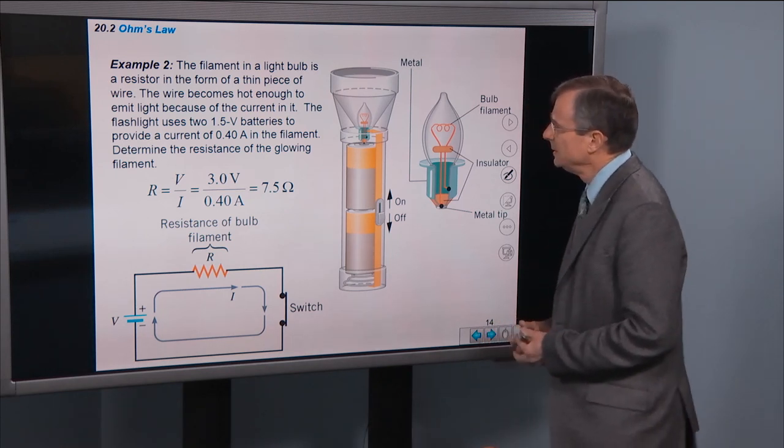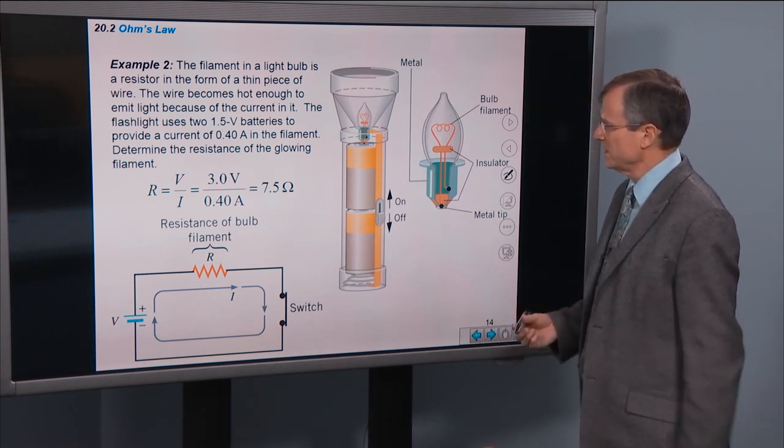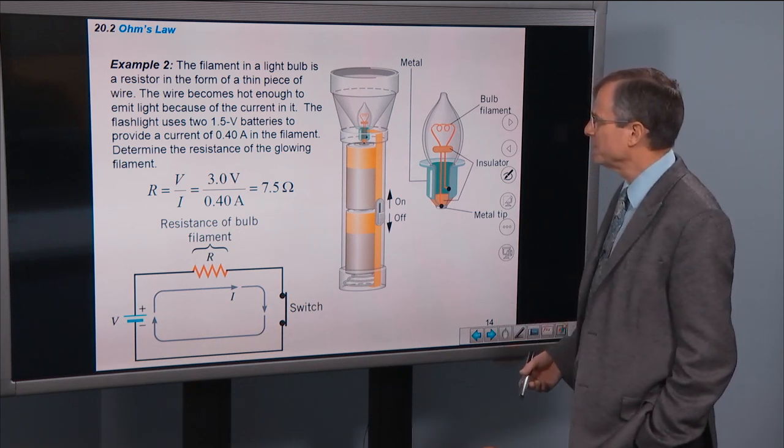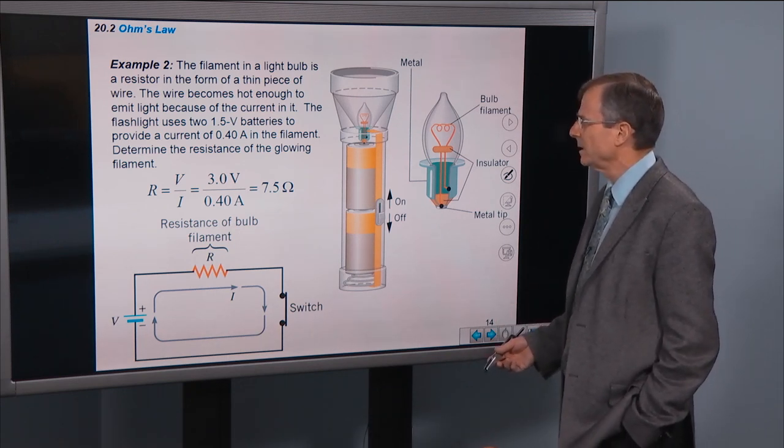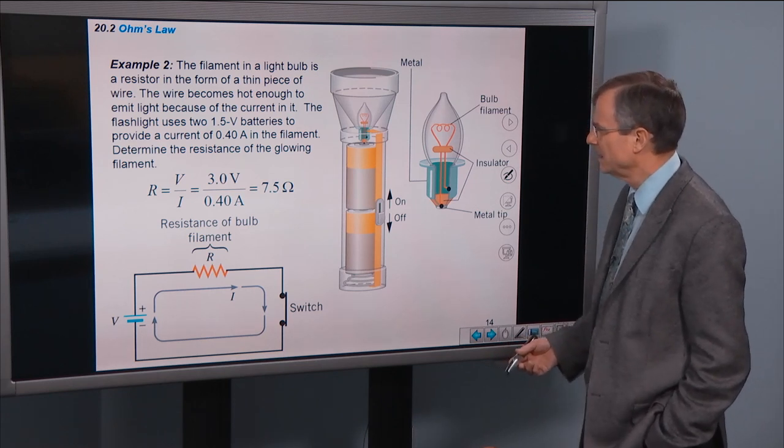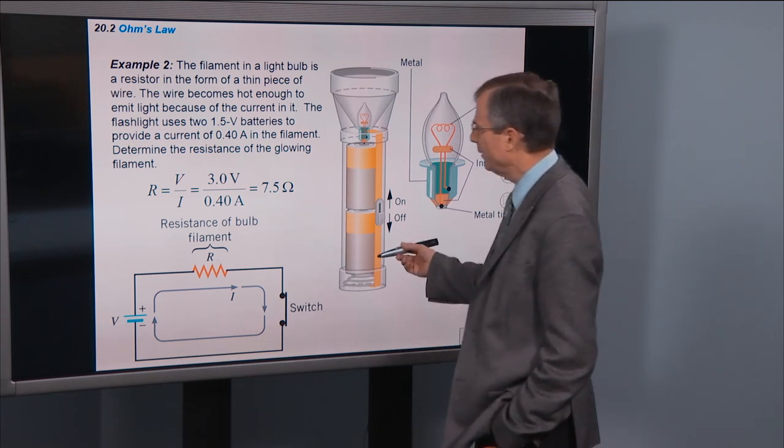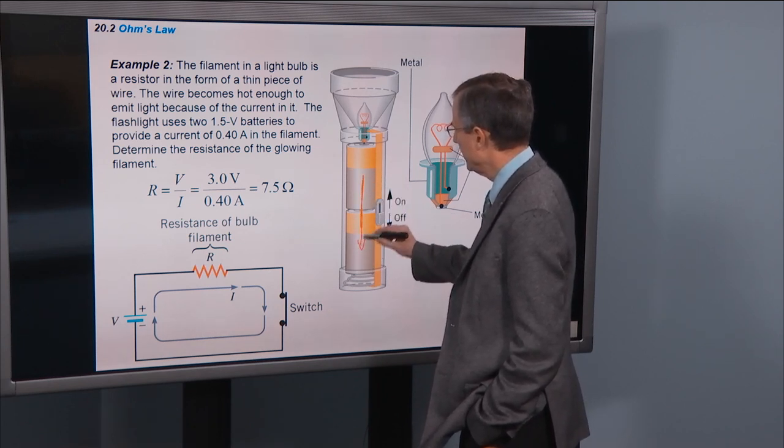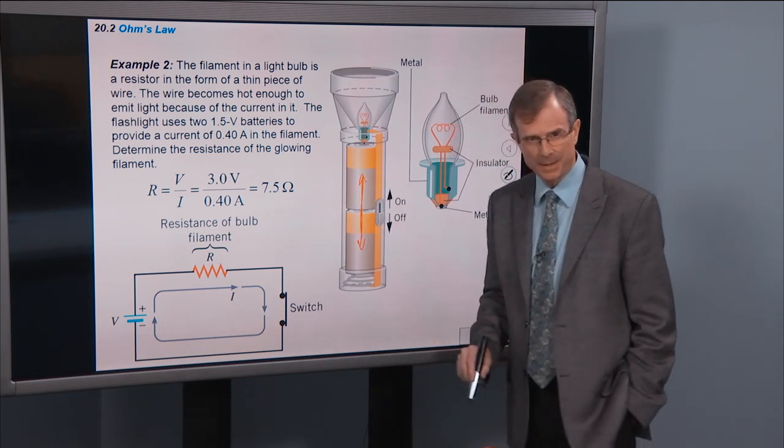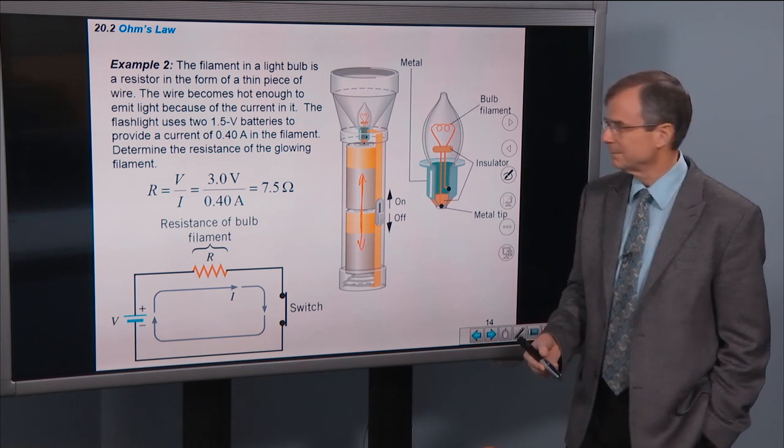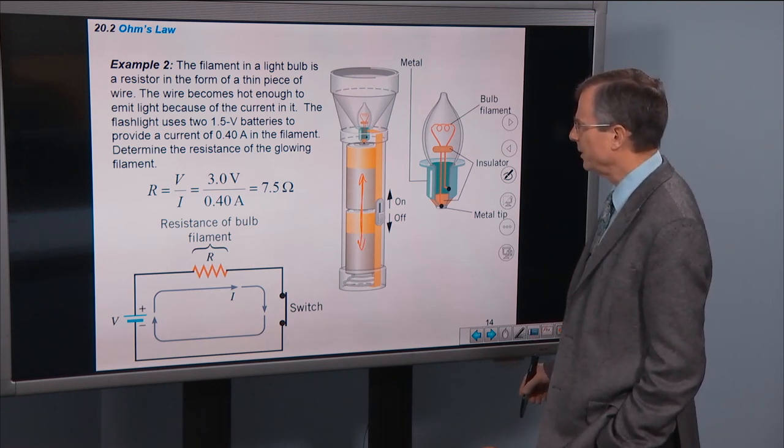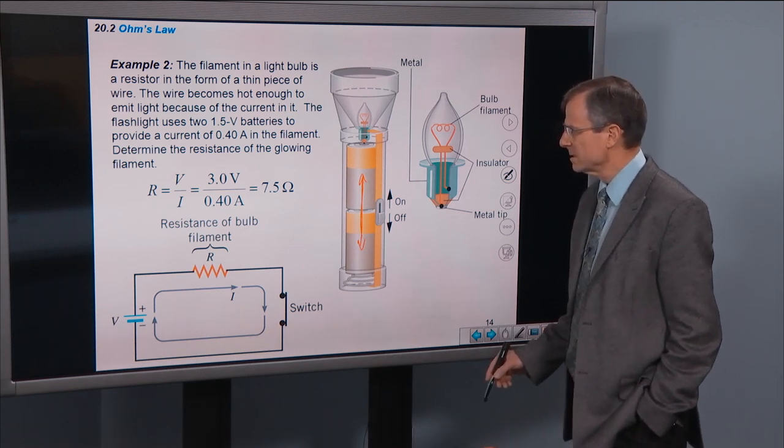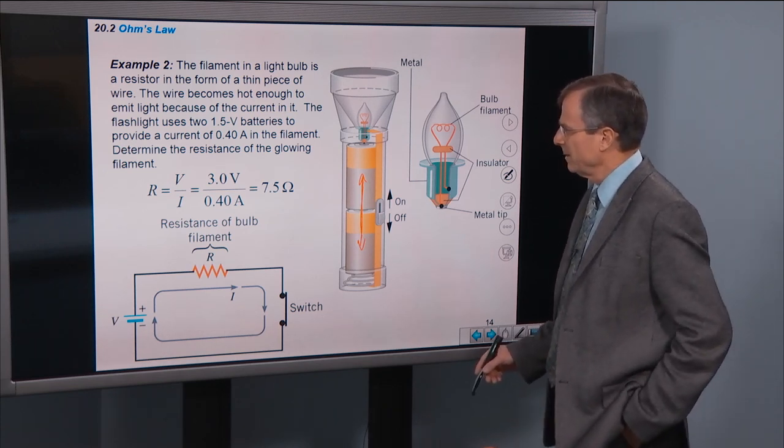Example: The filament in a light bulb is a resistor in the form of a thin piece of wire like we talked about before. The wire becomes hot enough to emit light because of the current in it. The flashlight uses two one and a half volt batteries placed end-to-end, which means in series, to provide a current of 0.4 amps in the filament. Determine the resistance of the glowing filament.